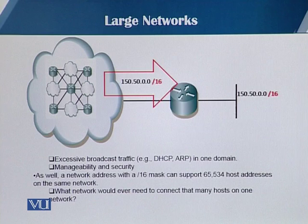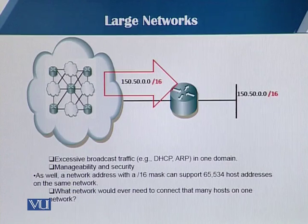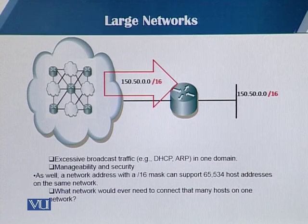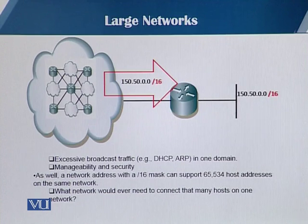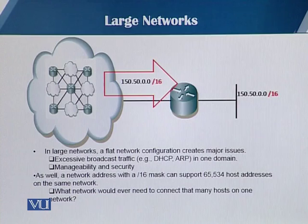As you can see on this slide, this particular network is slash 16, and it can basically support up to 65,000 host addresses on the same network. This creates multiple problems, like broadcast traffic — particularly DHCP and ARP traffic — having to go through this single domain with around 65,000 hosts. The manageability and security of the network is a big risk. This creates a flat network configuration, and it has its own issues.